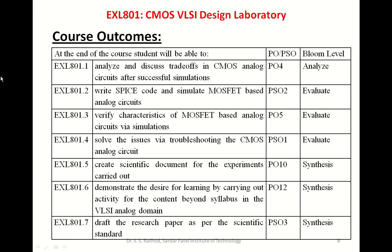This course is accompanied with a laboratory course, that is EXL401. There are seven course outcomes drafted for this lab course. CO1 is: student will be able to analyze and discuss trade-offs in CMOS analog circuits after successful simulations — mapped to program outcome four, Bloom's level analysis. CO2 is: student will be able to write SPICE code and simulate MOSFET-based analog circuits — mapped to program specific outcome two, Bloom's level evaluation. CO3 is: student will be able to verify characteristics of MOSFET-based analog circuits via simulations — mapped to PO5 (modern tool use), Bloom's level evaluation.